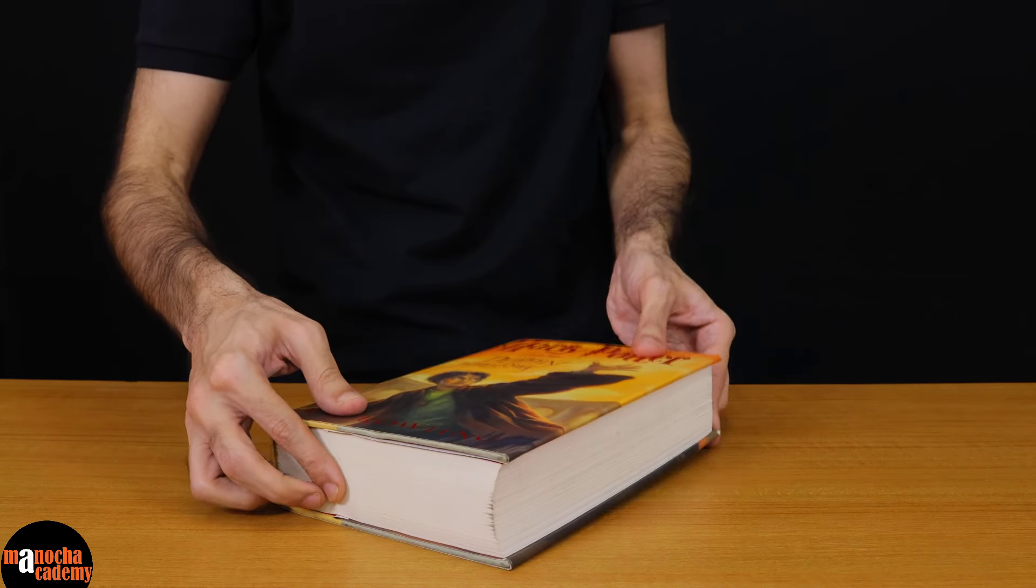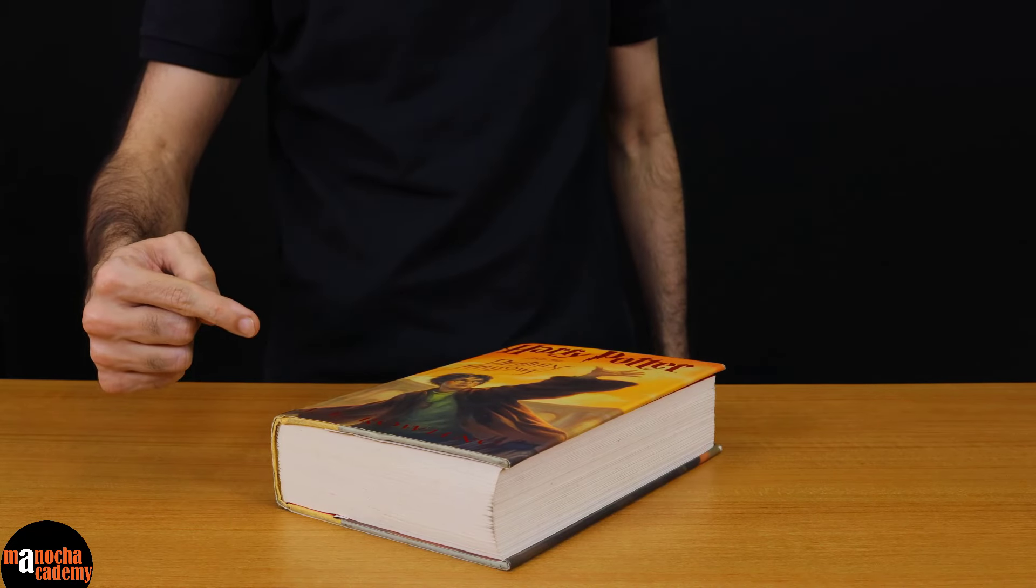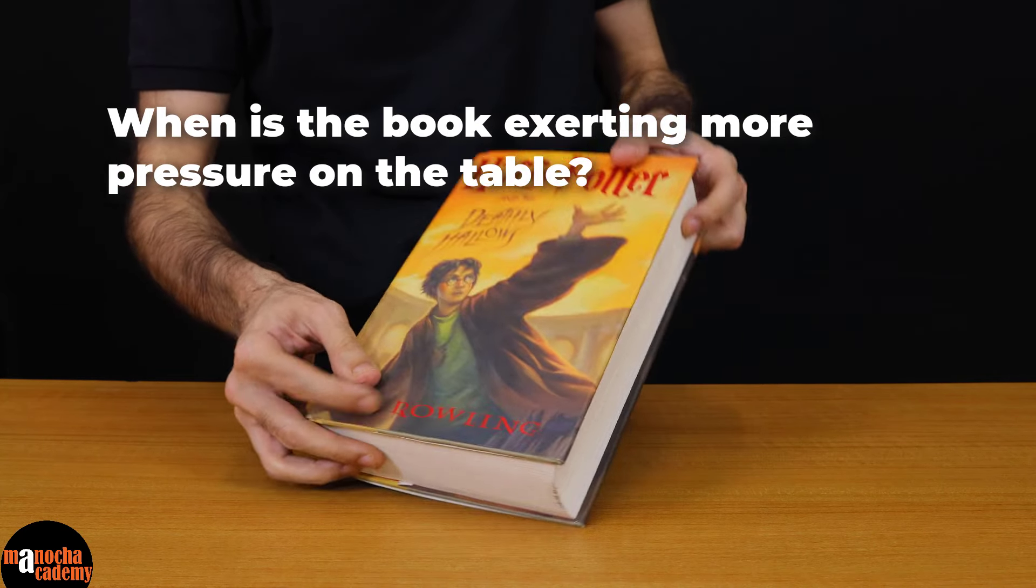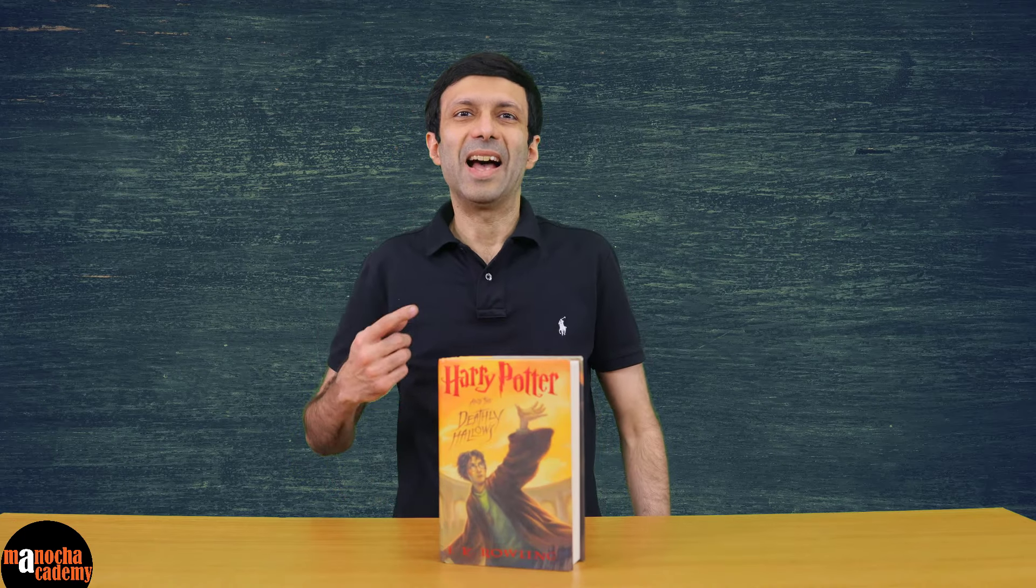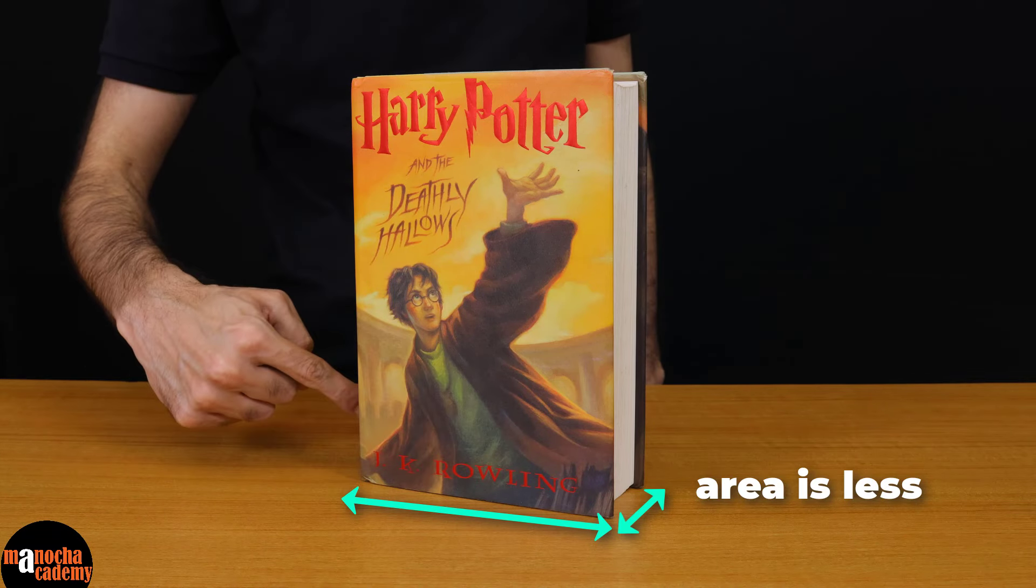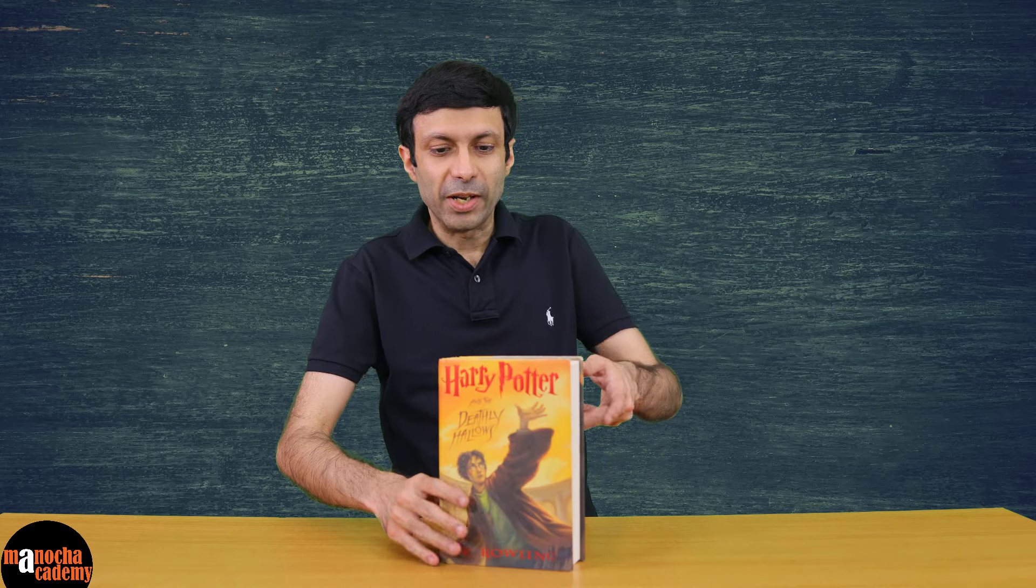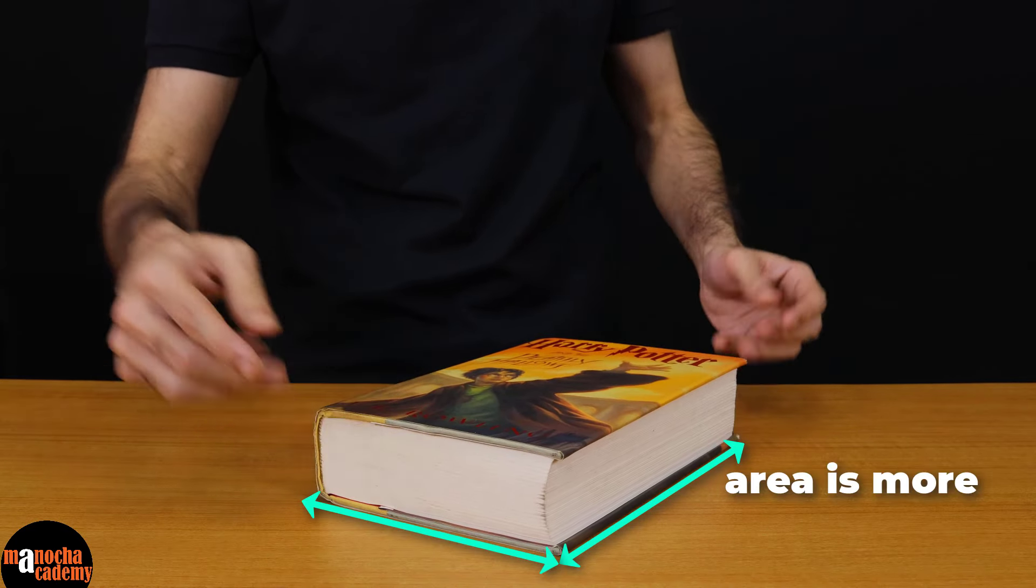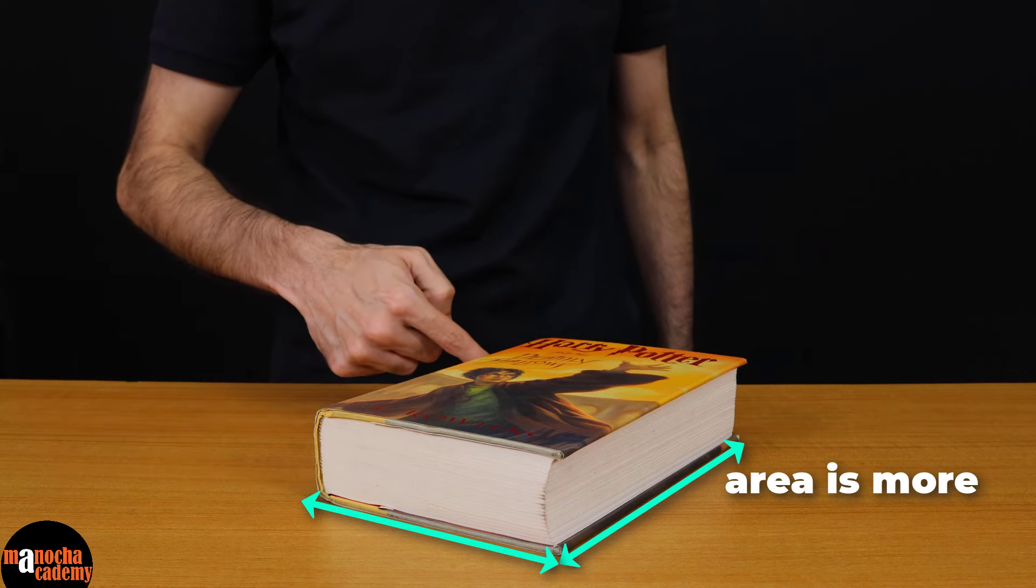Now, if I take this Harry Potter book and place it on the table like this. In which case do you think it is exerting more pressure on the table? If I place it like this or if I place it like this. Where do you think the pressure is more? That's right, here the pressure is more since the surface area is less. But when you keep the book like this, the area of contact is more so the pressure is going to be less.